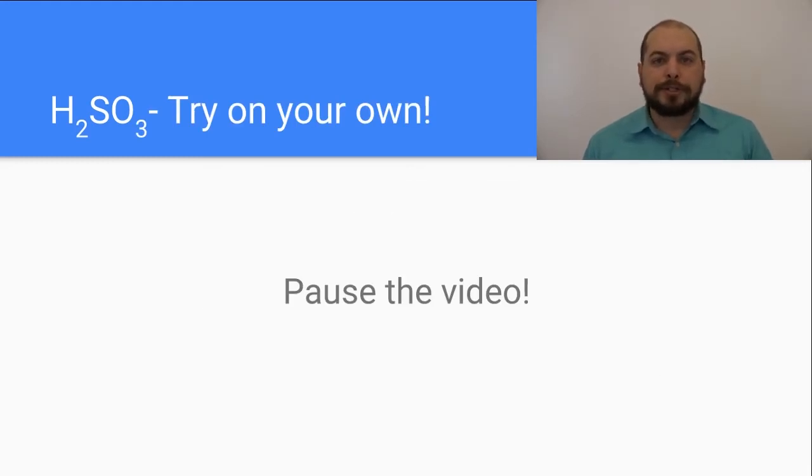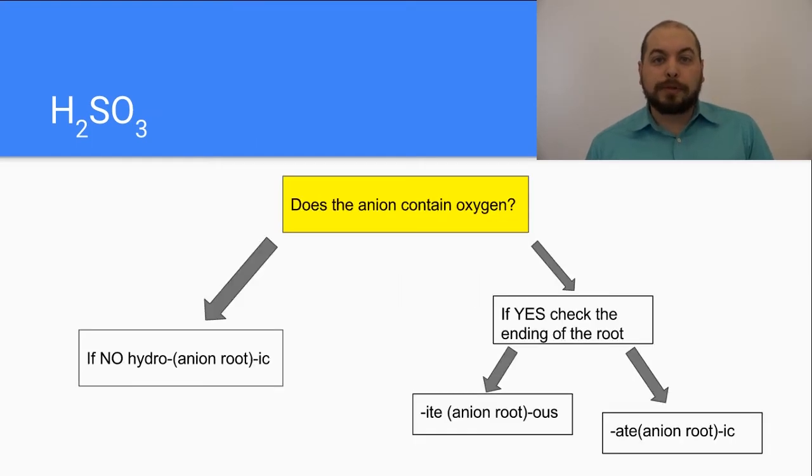So now I want you to try one. Here is our compound, H2SO3. I want you to follow the flowchart and see if you can come up with a name. So the name of this one was sulfurous acid. It is sulfurous acid because the anion, sulfite, does have an oxygen in it. Therefore we follow the flowchart to the right, and because the anion is named sulfite we then follow it to the left and we see that as sulfurous acid.